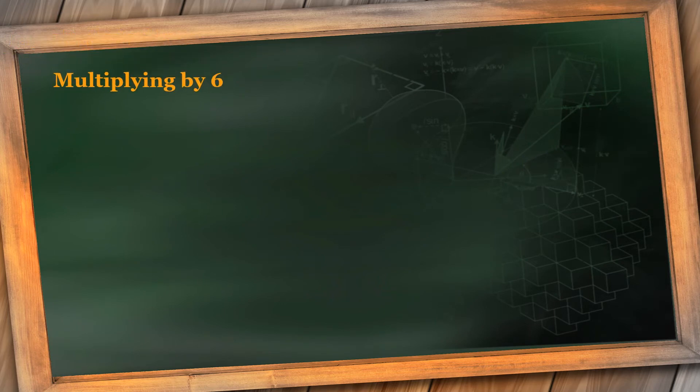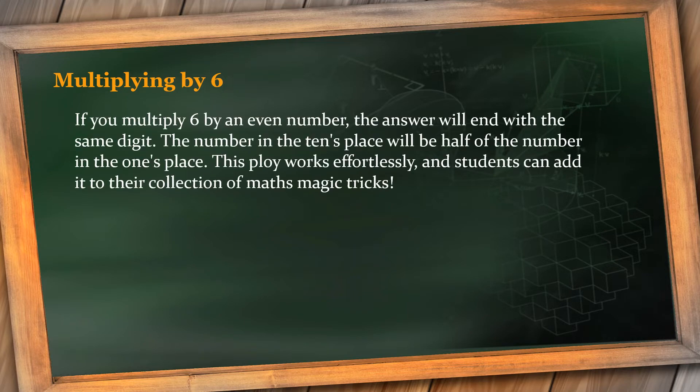First one: multiplying by 6. If you multiply 6 by an even number, the answer will end with the same digit. The number in the tens place will be half of the number in the ones place. This ploy works effortlessly and students can add it to their collection of math magic tricks. It was too difficult to understand these words, right? I have an example for you to make it clear.